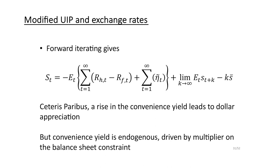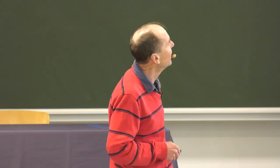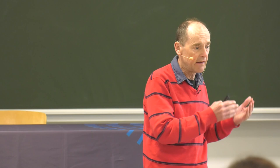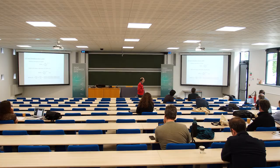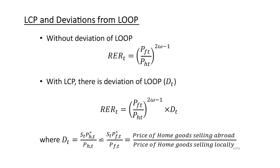If eta-tilde rises and policy rates are constant, there must be an expected depreciation, facilitated by an immediate appreciation. The convenience yield is driven by the Lagrange multiplier and the balance sheet constraint. Regarding the real exchange rate: with producer currency pricing and the law of one price holding, the real exchange rate would be driven by the terms of trade. But in our model we have a deviation from the law of one price, which is a big aspect of the real exchange rate. Policy is determined by a Taylor rule with interest rate smoothing. Fiscal policy involves exogenous issuance of government bonds in both countries — banks need to hold these bonds for the mechanism to operate.